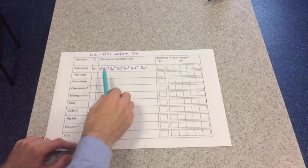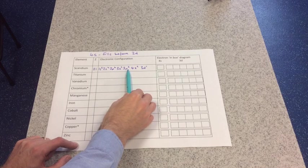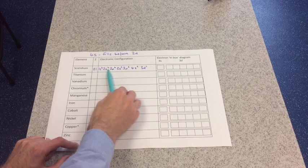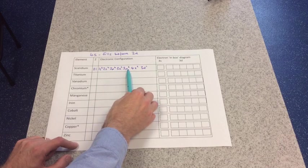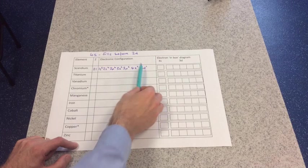Remember also that you can abbreviate this part of the structure to argon in square brackets. So instead of writing all of that up to 3p6, you can just have [Ar] in square brackets, and then 4s2, 3d1.